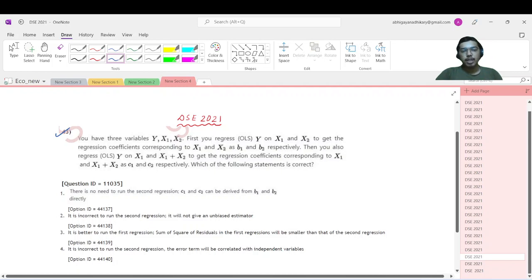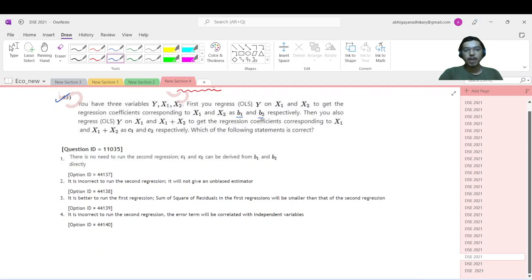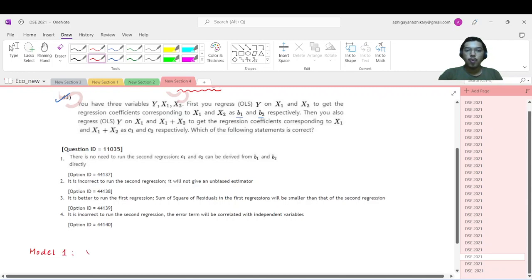You have three variables: y, x1, and x2. First, you regress using the OLS technique y on x1 and x2 to get the regression coefficients corresponding to x1 and x2 as b1 and b2 respectively. So if I just write this down first, Model 1: y can be basically written as b0 plus b1 times x1 plus b2 times x2 plus some error term e.